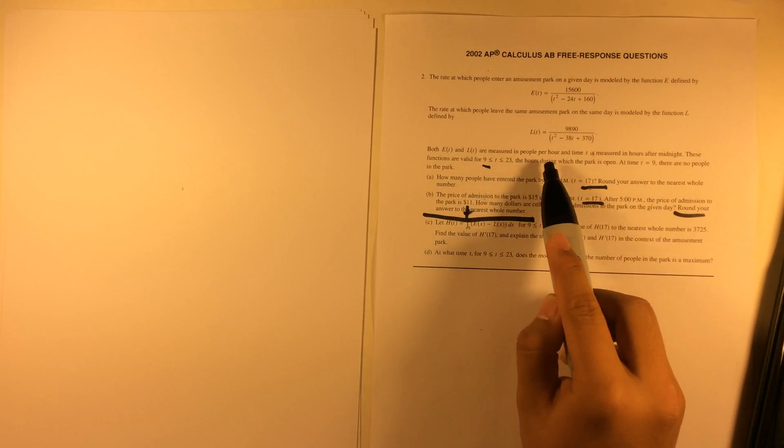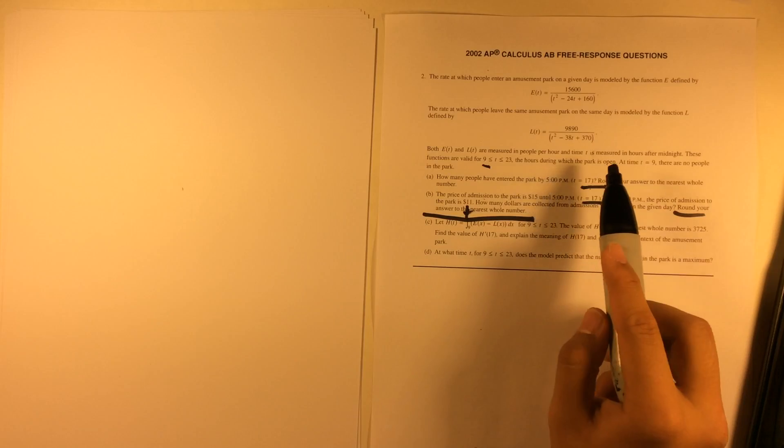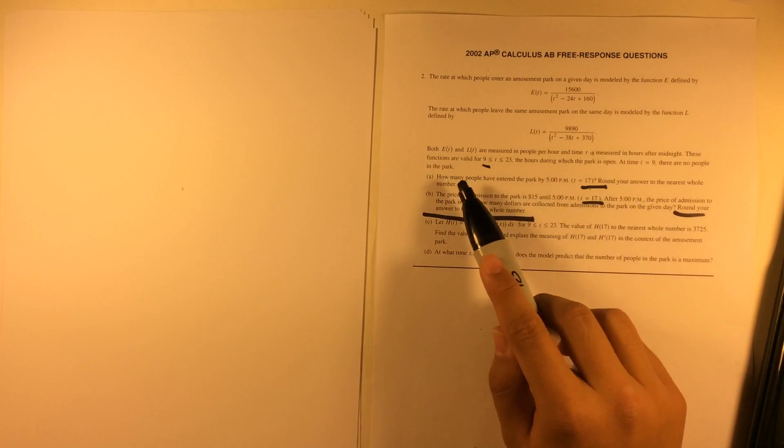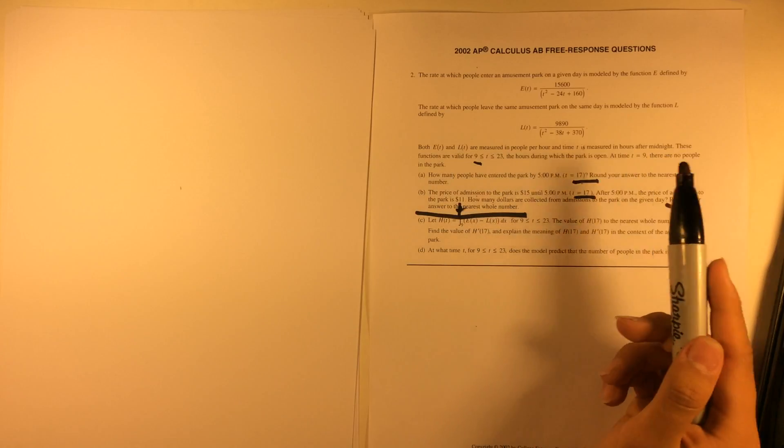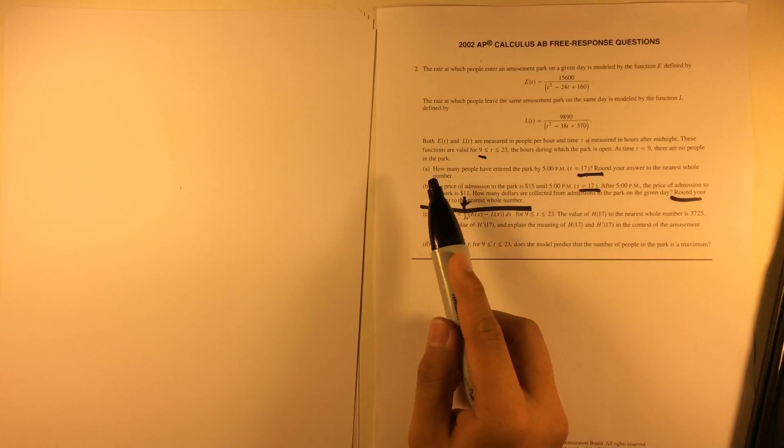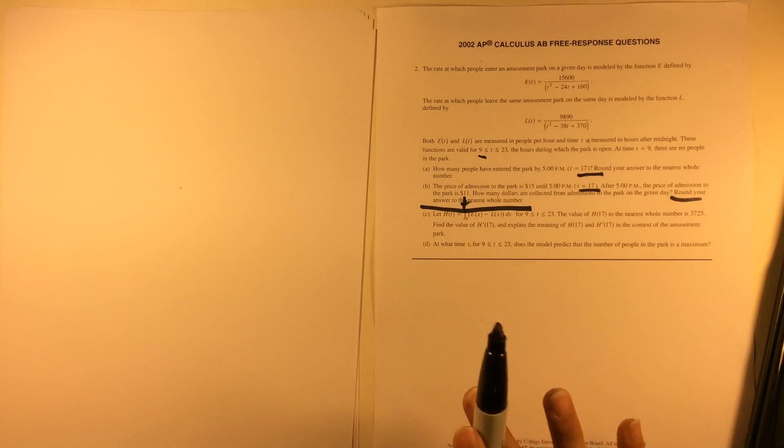Both these functions are valid, measuring people per hour as a rate, and time is measured in hours after midnight. The functions are valid for T between 9 and 23, the hours during which the park is open. At time equals 9, there are no people in the park, so the park is empty at the beginning of the day.